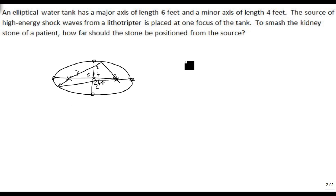Here we know the major axis is along the x. So a is 3, b is 2, so a squared is 9, and b squared is 4. Because the distance from here to here is c to here and c to here, we need 2c. That's how far away we need to put the kidney stone.